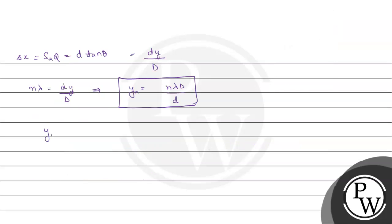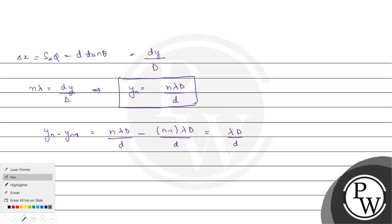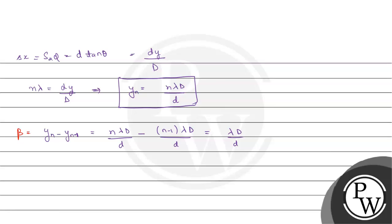Fringe width equals Y_n minus Y_(n-1), since it is the width between two consecutive bright fringes. It equals n lambda D over small d minus (n-1) lambda D over small d, which simplifies to lambda D over small d. This is denoted by beta — fringe width beta equals lambda times capital D over small d, which is the distance between two consecutive bright fringes. I hope you understood it well. Thank you.